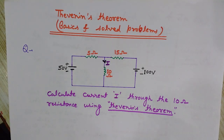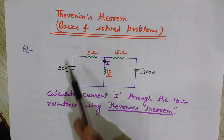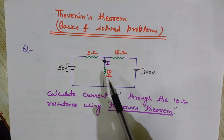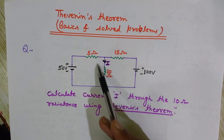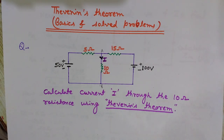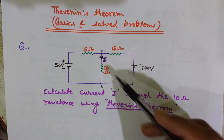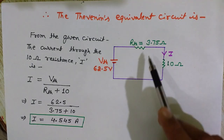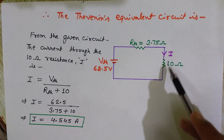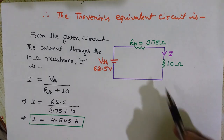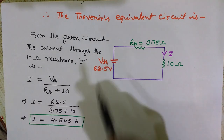In this problem, I will explain how we can find the Thevenin's voltage VTH and Thevenin's resistance RTH so that we can replace this network. Although this is not a very complex network, this method can be used on any complex network. My purpose is to convert this network into a simple series circuit having VTH and RTH, so I can easily calculate current I using Ohm's law V = IR.